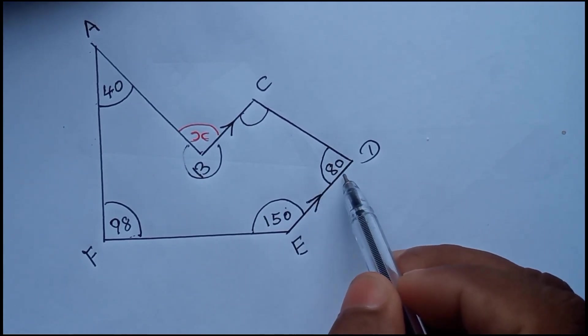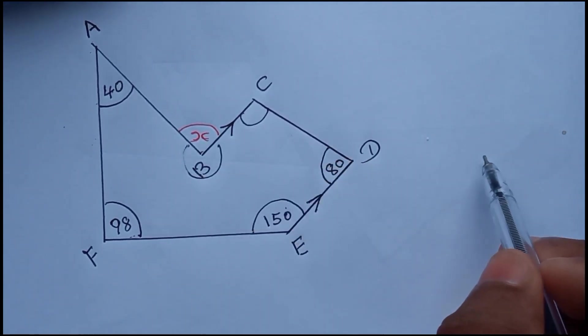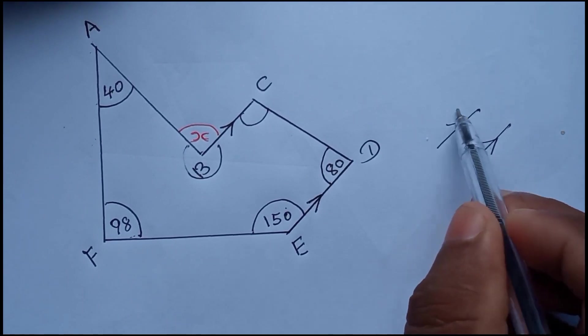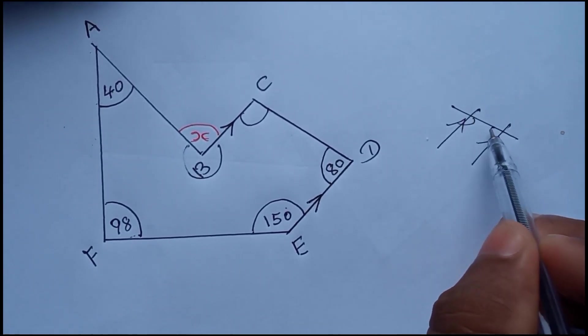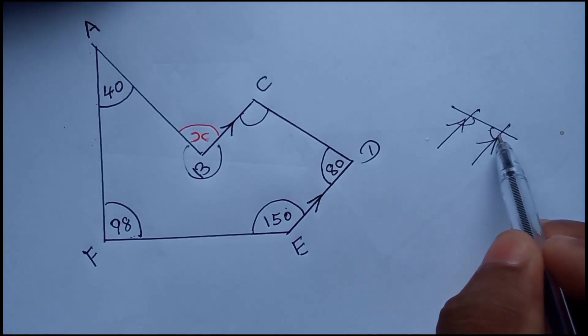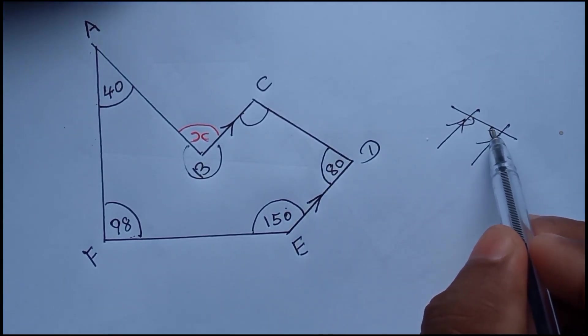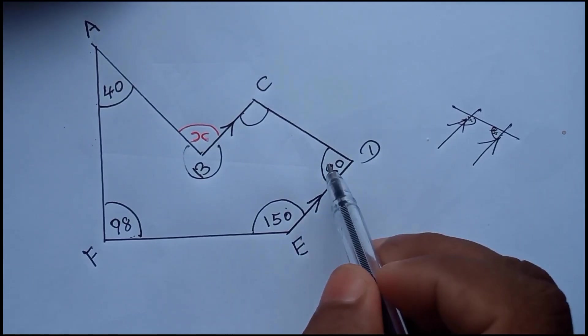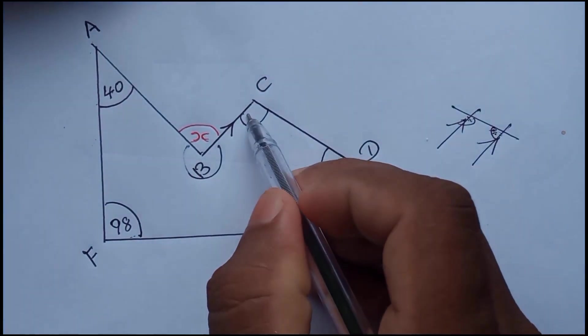Because you know when you have two lines parallel like this way, right, if these two lines are parallel, these two angles we call further interior allied angles. This plus this should be 180. Interior allied angle, right, it should be 180. So if this is 80, this should be 100.